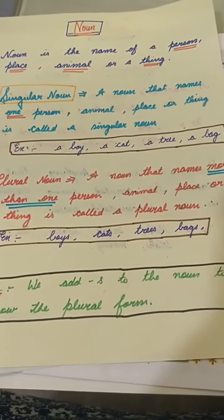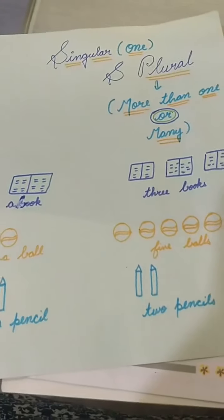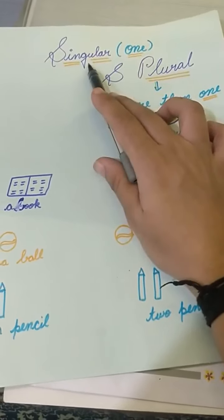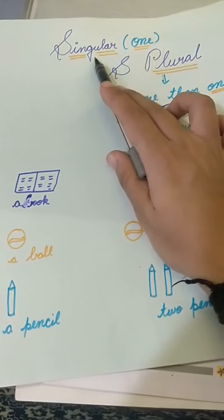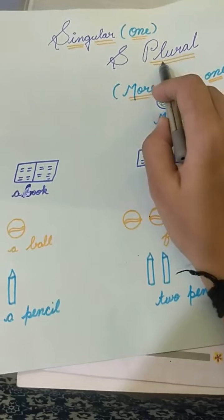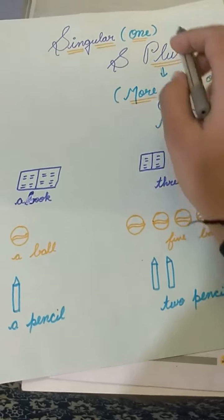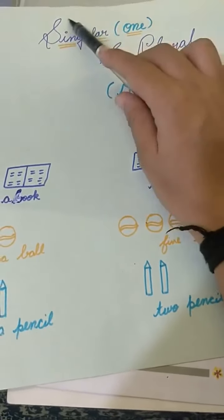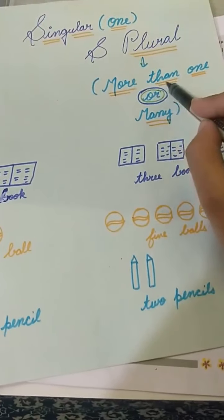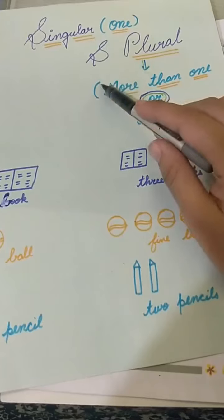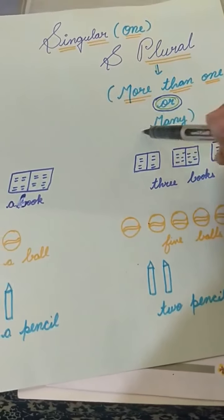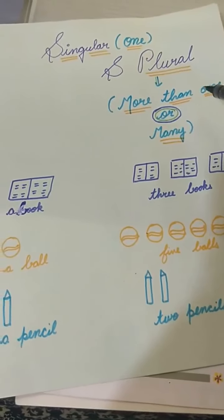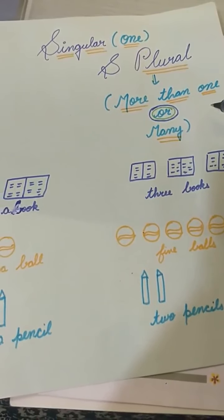Note: we add S to the noun to show the plural form. Hum singular form se plural form banane ke liye us word mein S add karte hain. Singular means one — jab bhi hum ek cheez ke baare mein baat karte hain to use kehte hain singular. Plural means more than one — jab hum ek se zyada cheez ke baare mein baat karte hain to use kehte hain plural.